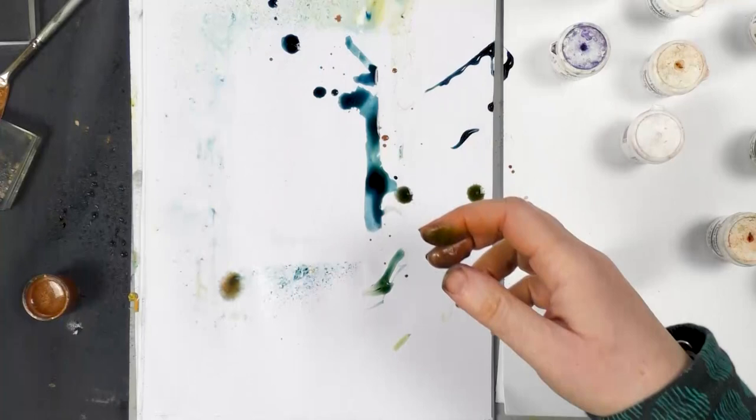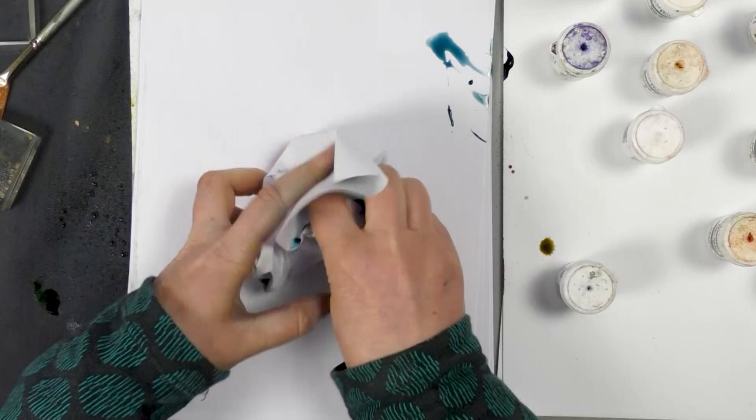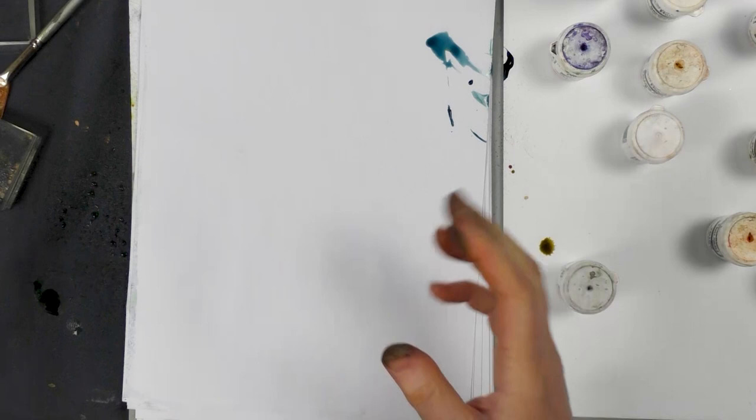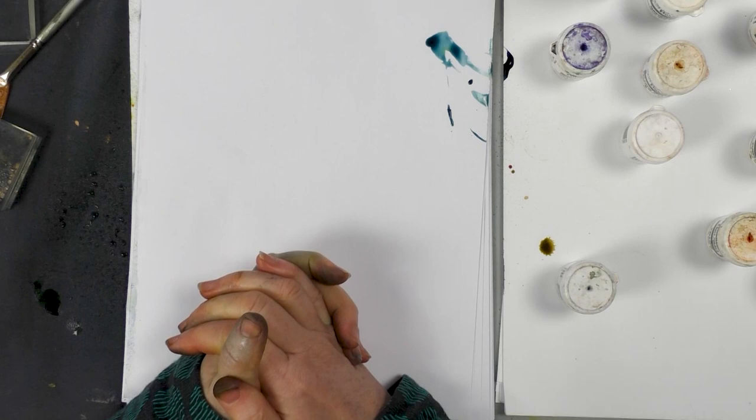And you can see how quick and how easy it is to create these backgrounds. So you can do quite a few of them. You know, just sit there for half an hour, create your backgrounds, let them dry. And then you've got your background ready to stamp onto. So I hope that's helpful in some way. And I'm going to let those dry and I'm going to be stamping on them later. Okay, thanks guys. Bye for now.